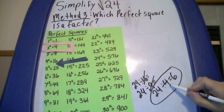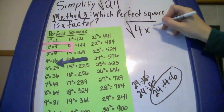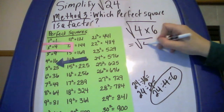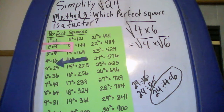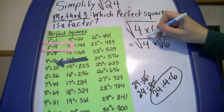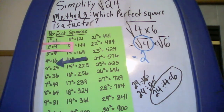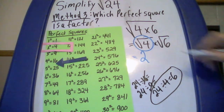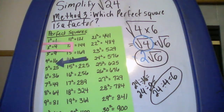I'm going to factor 24 as 4 times 6, then rewrite this as the square root of 4 times the square root of 6. Evaluating the perfect square: the square root of 4 is equal to 2. The square root of 6 is not a perfect square, so I leave that as the square root of 6. And there's our answer. I've shown you three different methods for simplifying the square root. If you have a preference as to which one you use, you're welcome to use it — all three methods work.